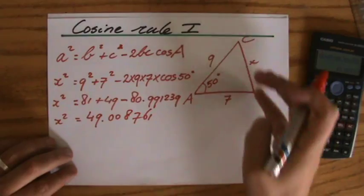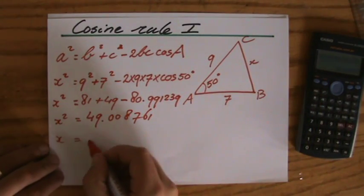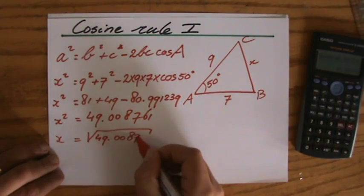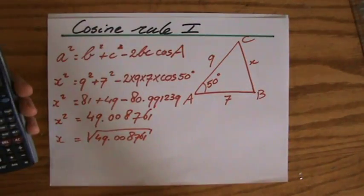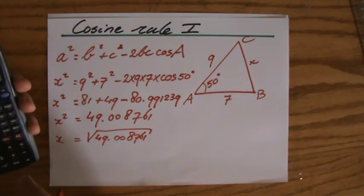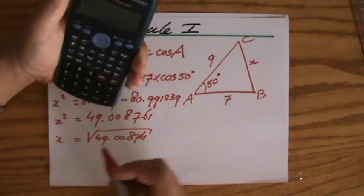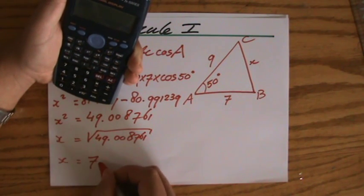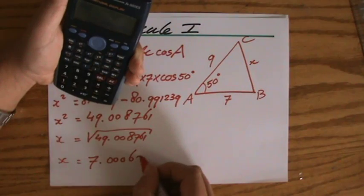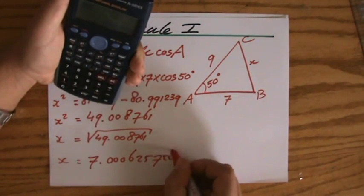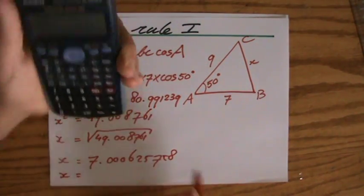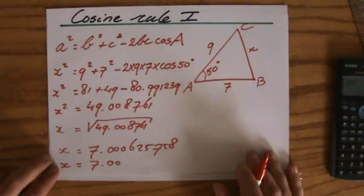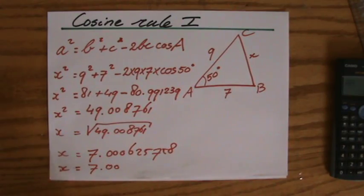That's a little bit big for that length because I still have to square root that. As you can see, that is pretty much 7, because 49 is a square number. But anyway, just do it properly — the square root of that answer gives 7.00006257..., so to 3 significant figures it's 7.00. Those zeros belong to the answer. So the cosine rule works here.